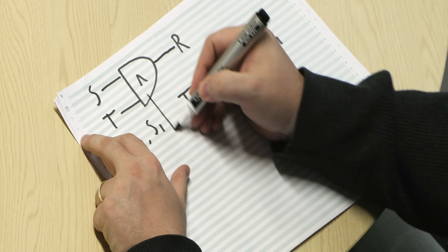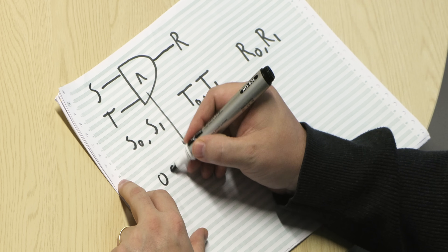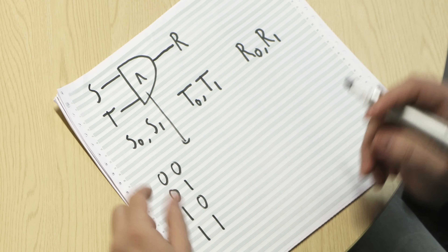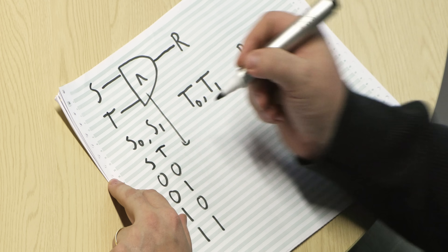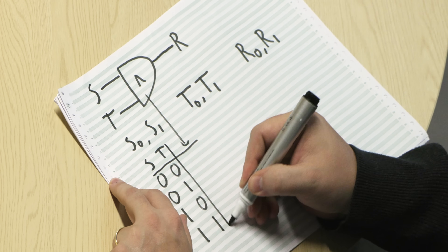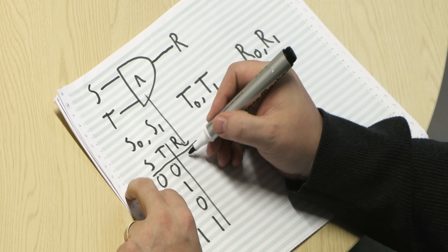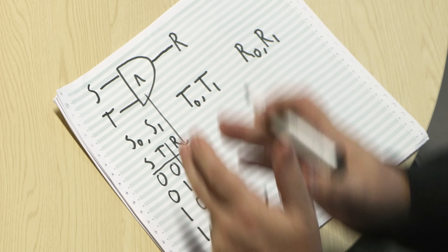Now, what's the big trick of garbled circuits? This gate is actually a table of encryptions. We've all heard of a truth table — we have the four possible inputs: S=0 T=0, S=0 T=1, S=1 T=0, S=1 T=1. And the output R for an AND gate is 0, 0, 0, 1. That's the logical interpretation of the gate.